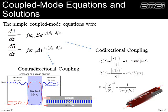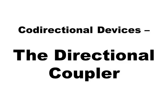We made a series of approximations and came to the simplified version of the coupled mode equations. From that we looked at two different cases: co-directional coupling, where the modes we're coupling between are traveling in the same direction, and contra-directional coupling, where the modes we're coupling are traveling in opposite directions like in Bragg gratings. On to the co-directional devices — the first one, by far the most common, is something called the directional coupler.